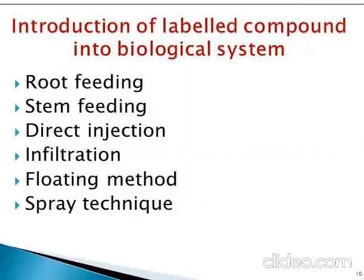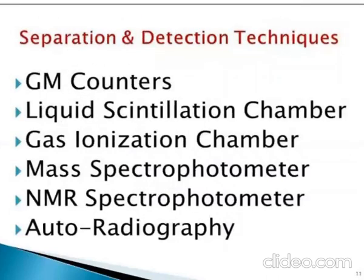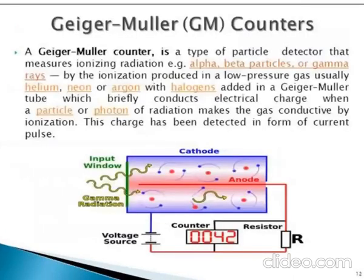For separation and detection of labeled compounds, the following instruments are used: Geiger-Müller counters, liquid scintillation chambers, gas ionization chambers, mass spectrophotometer, NMR spectrophotometer, and autoradiography.